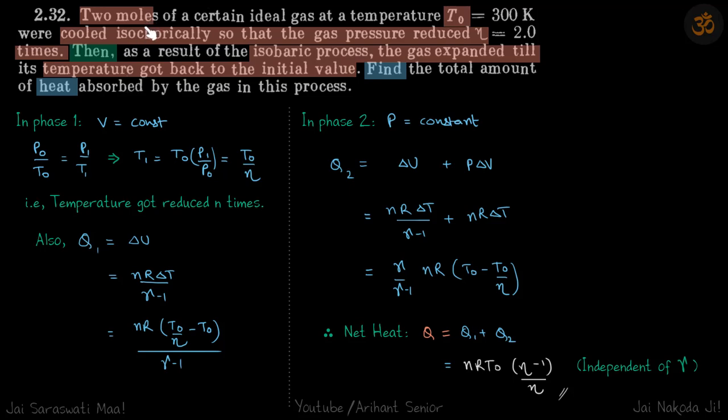In this problem, the gas undergoes two stages. In the first stage, we have two moles of gas that is cooled isochorically such that gas pressure reduces eta times. And then in the second process...